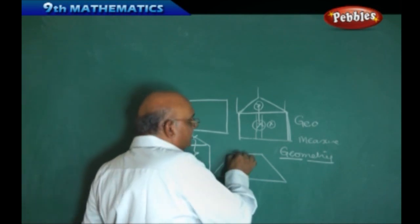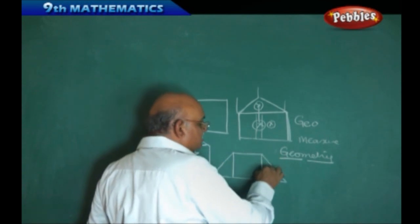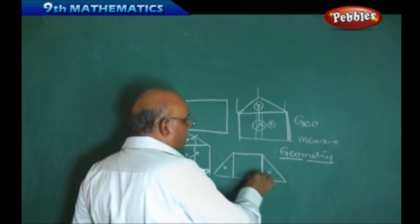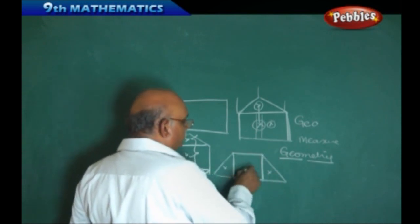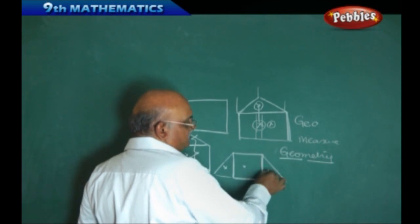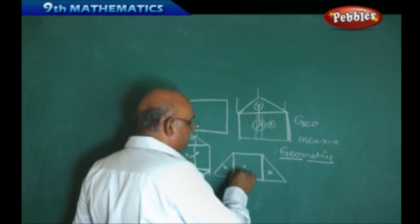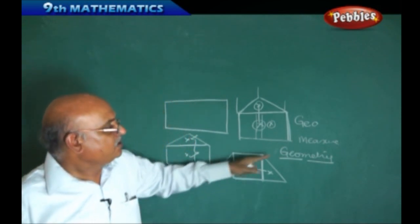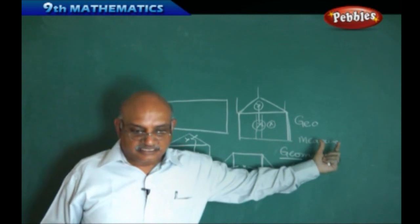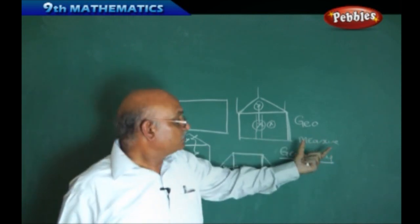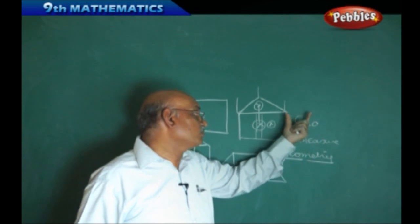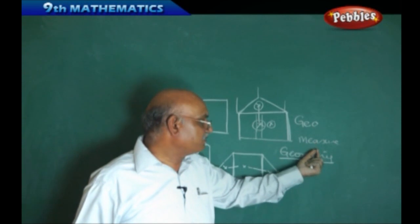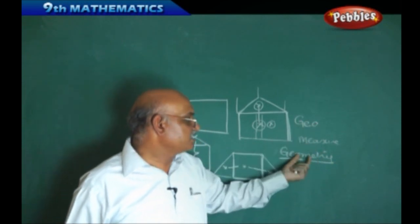In the same manner, if you take a trapezium, it contains two triangles and one four-sided figure. We find the area of each part and add all three to get the total. This illustrates that 'Geo' — the Greek word — means the total figure can be measured with respect to the sum of its parts. Therefore, geometry basically speaks about that.